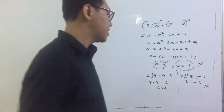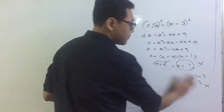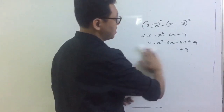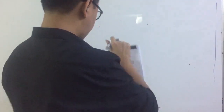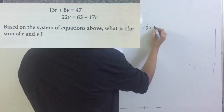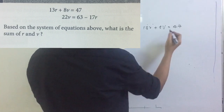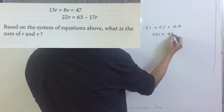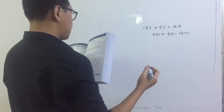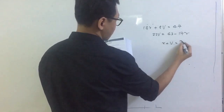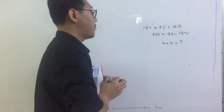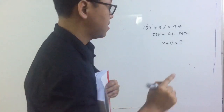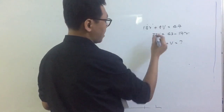The second tip I want to share is about solving simultaneous equations — equation 1 and equation 2 — especially in the no-calculator part. So this one usually comes in the no-calculator part: 13R plus 8V equals 47, and 22R equals 63. The question asks you to find R plus 3V. Most students try to solve it the long way, but remember — always try to add or subtract the equations just like that.